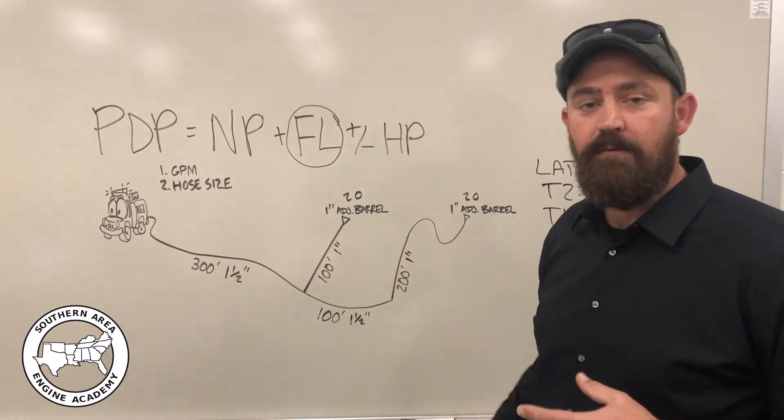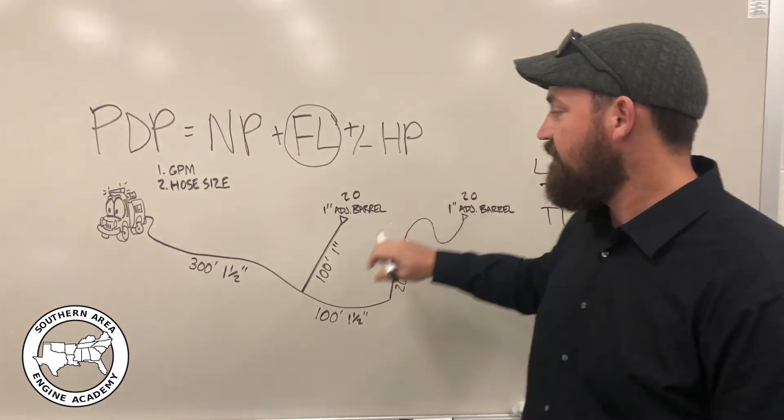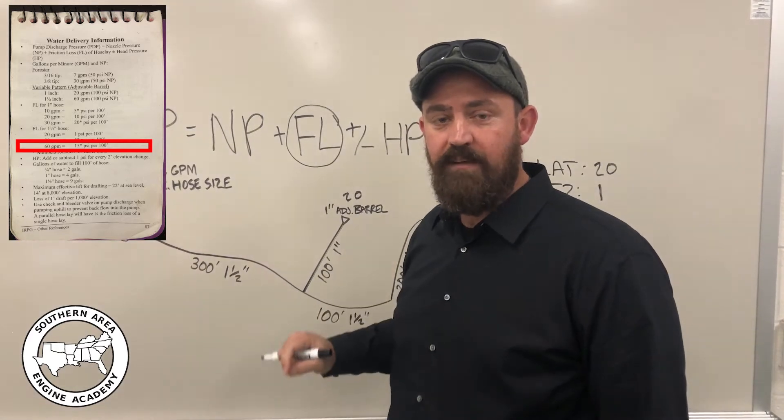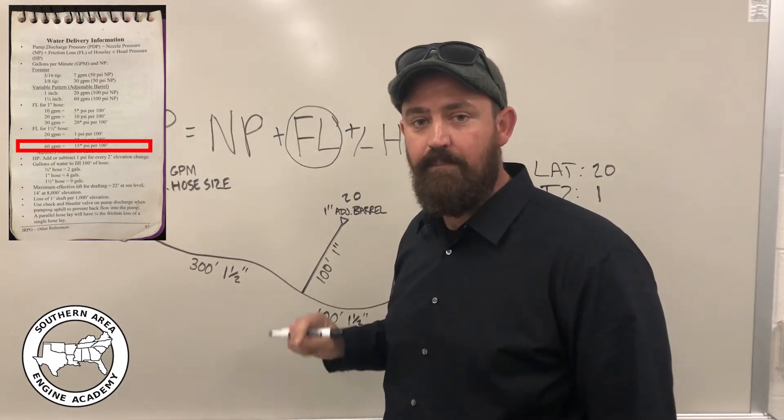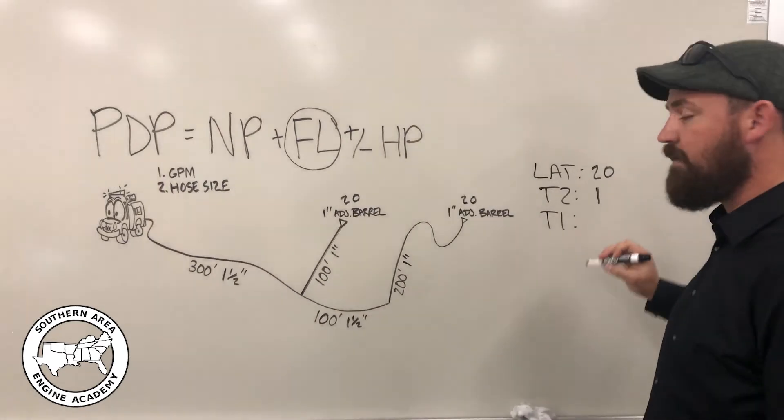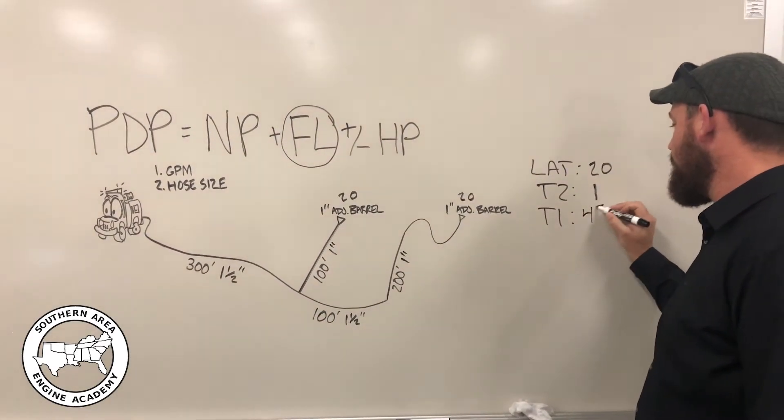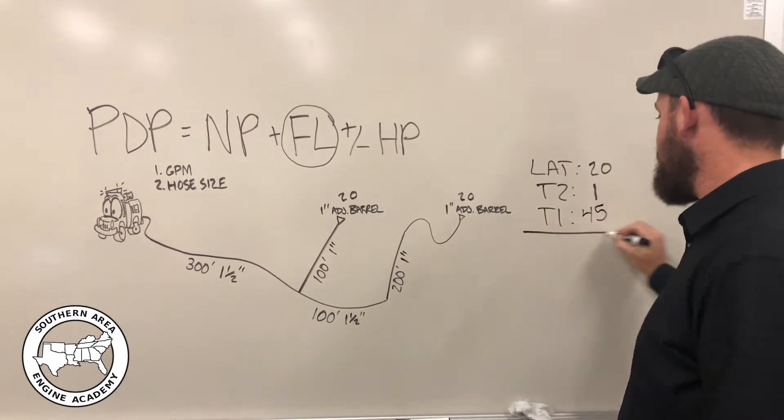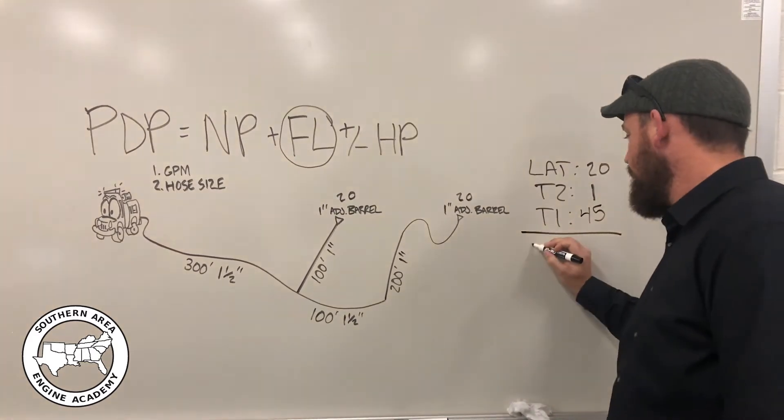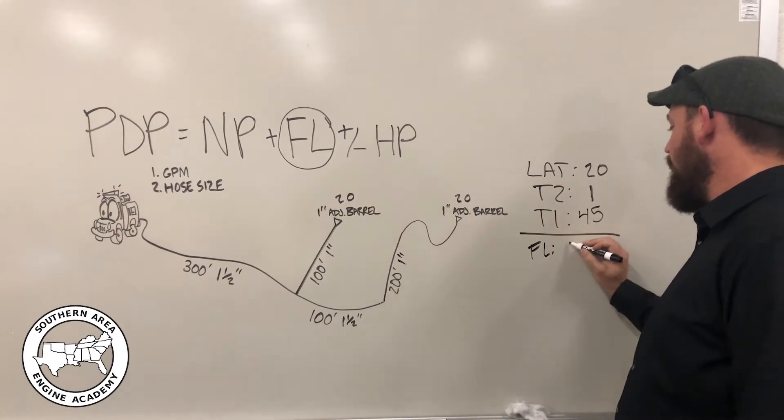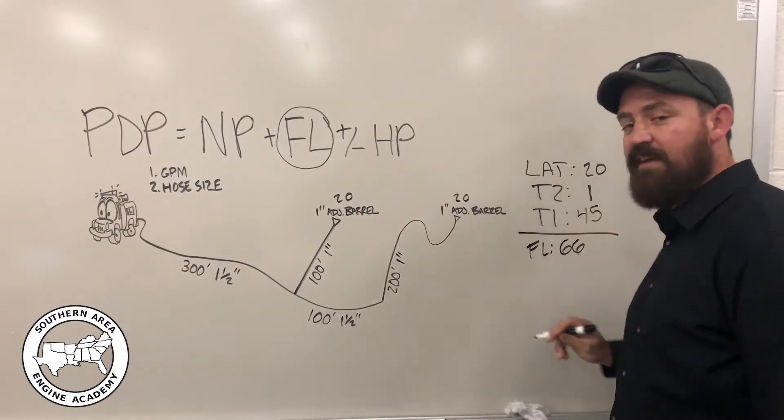So if we look at inch and a half hose at 60 GPM, we're losing 15 PSI per section. So trunk one is 300 feet, three sections at 15 PSI makes 45 pounds of pressure lost for a total friction loss of the hose lay of 66 PSI.